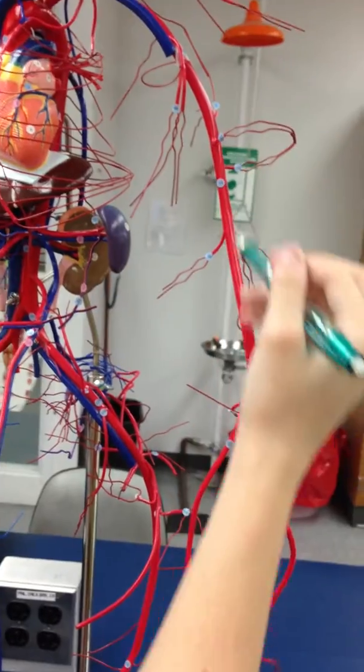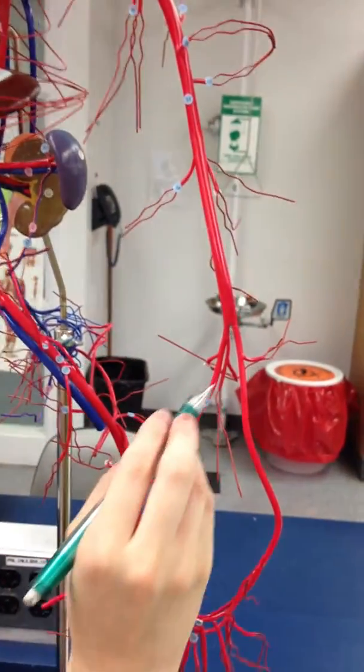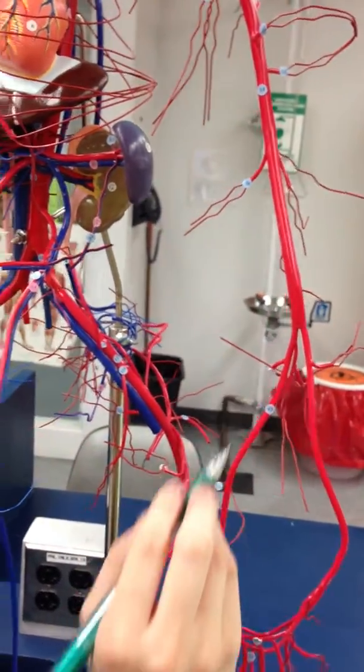The brachial is in the arm, here, the length of the upper arm. The ulnar is number 67, right here, which goes to the pinky.